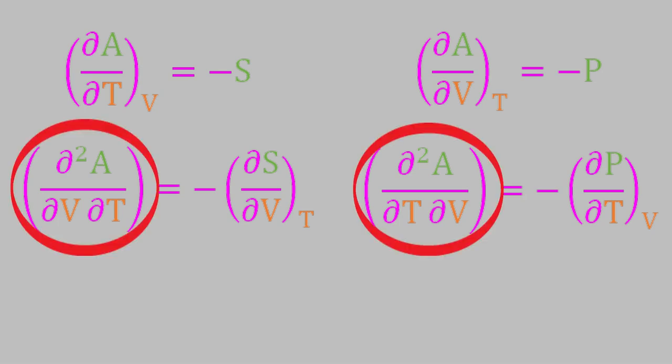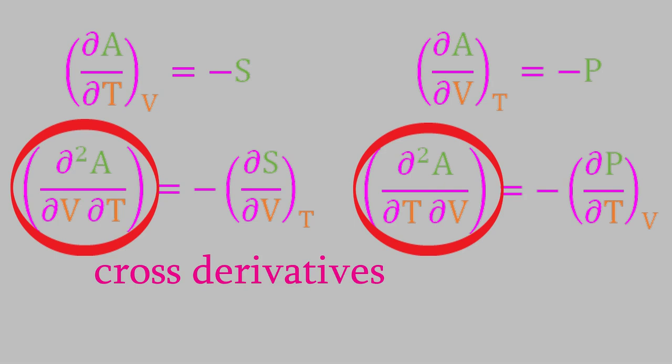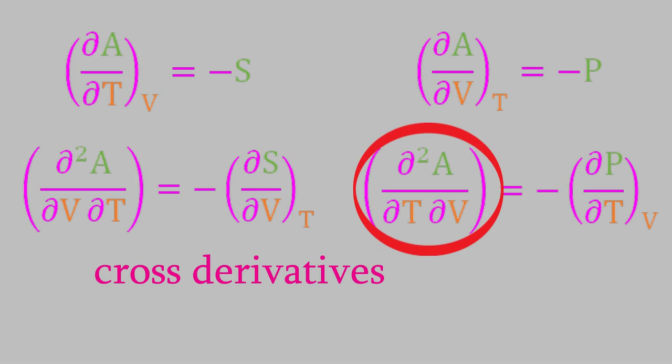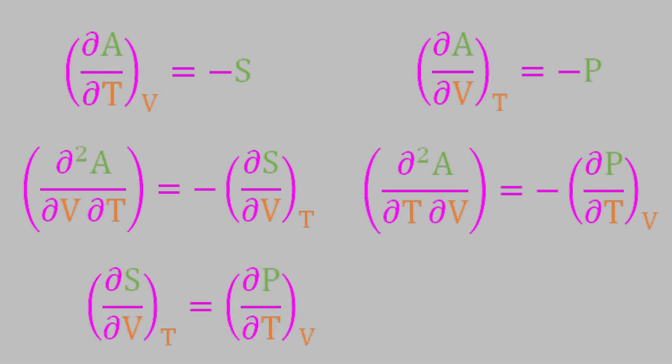That gives us the negative of the partial derivative of S with respect to V in the first expression, and the negative of the partial derivative of P with respect to T in the second expression. The left-hand side of each expression is called a cross derivative — simply a second derivative where each differentiation is with respect to a different variable. In the first expression, we differentiated with respect to T first, and then with respect to V. In the second expression, we did the differentiation in the opposite order. It turns out that for a continuous function, the value of the cross derivative is the same no matter what order the differentiations take place in.